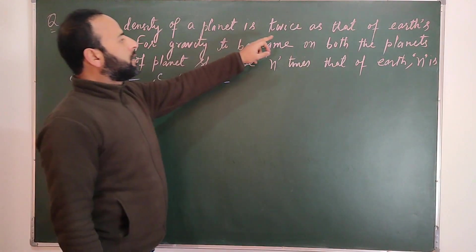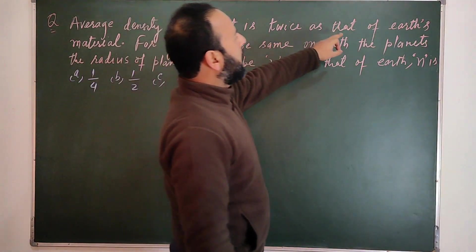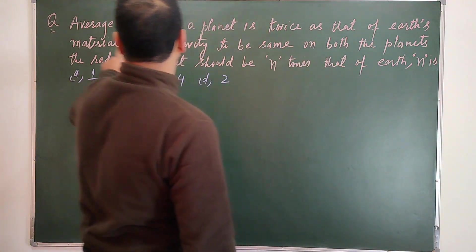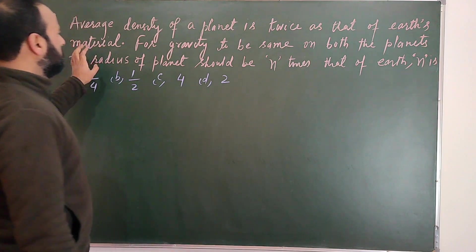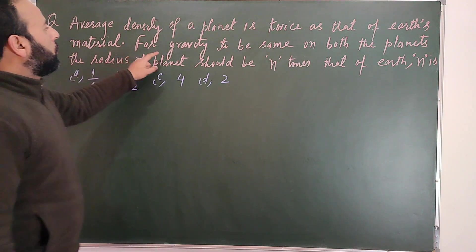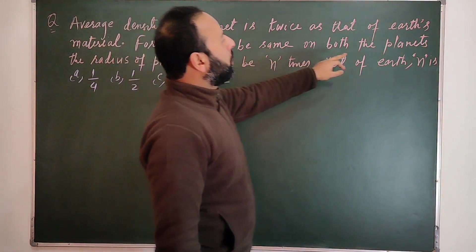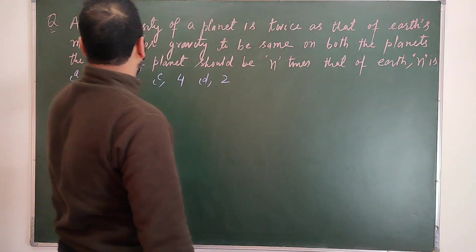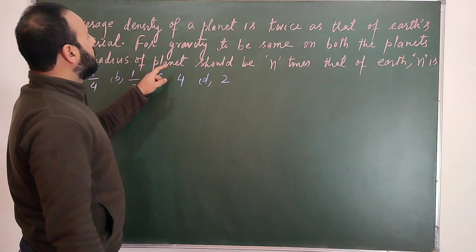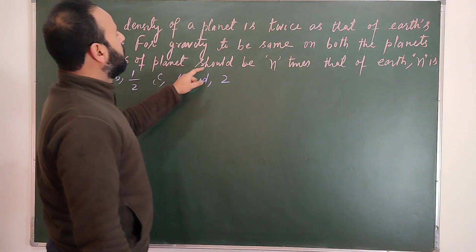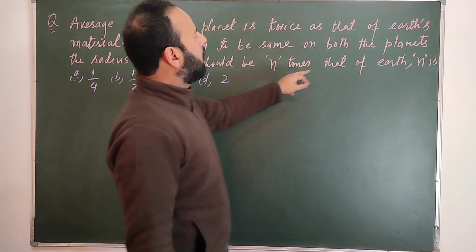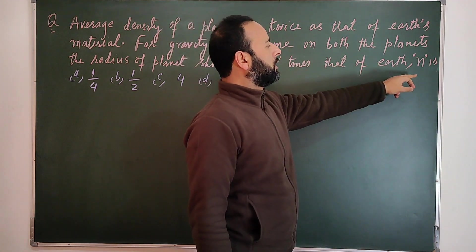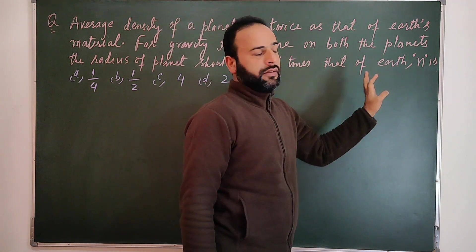The density of a planet is twice that of Earth's material. For gravity to be the same on both planets, the radius of the planet should be n times that of Earth. Find n.